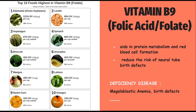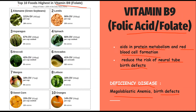Next we have vitamin B9, also called folic acid or folate. It aids in protein metabolism and red blood cell formation, and it reduces the risk of neural tube birth defects. Deficiency diseases caused by folate are megaloblastic anemia and birth defects. The top foods highest in vitamin B9 include green soya beans, lentils, asparagus, spinach, avocado, broccoli, mangoes, lettuce, orange, and sweet corn.